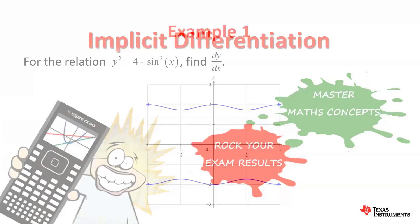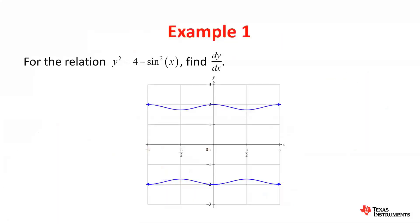So to start with, our first example says this: for the relation y squared equals 4 minus sine squared of x, which is the relation depicted on the graph below, find the value of dy/dx.